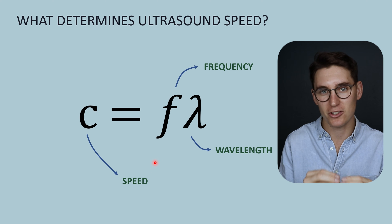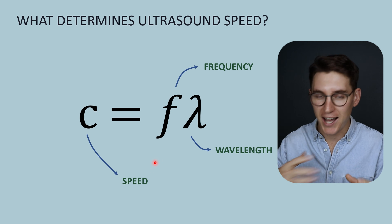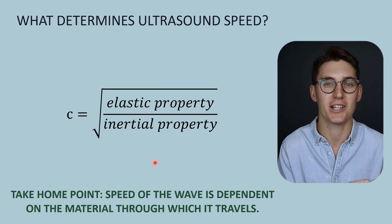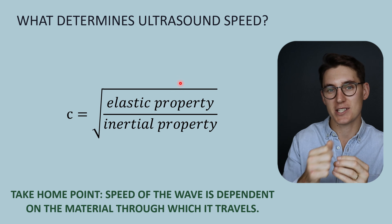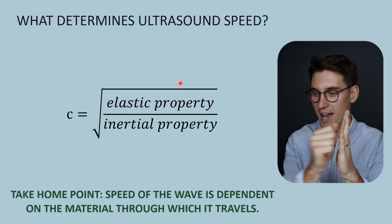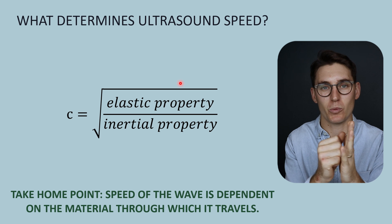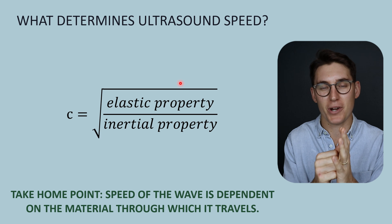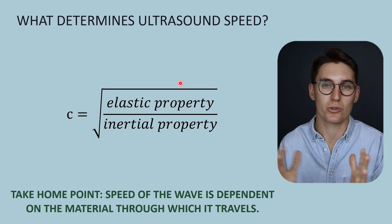The speed of sound is dependent on the material through which it's traveling. There are two major properties that determine this. The first is the elastic property: how readily do the units in that material return to their resting place? How stiff is that tissue? The stiffer the tissue, the more readily a unit comes back, the more resistant it is to compression. The stiffer a material is, the faster sound will travel through it.